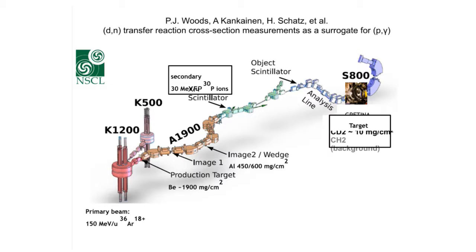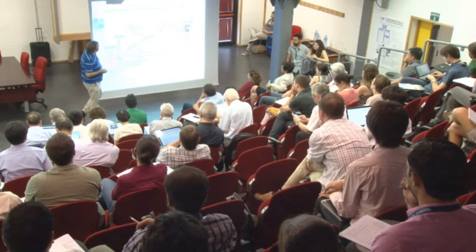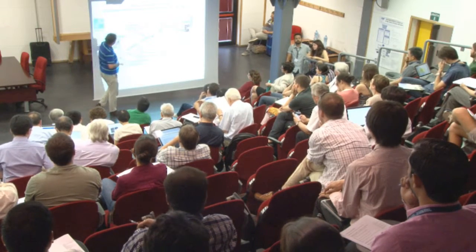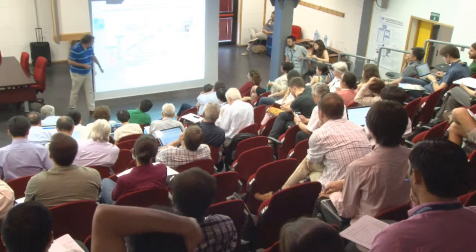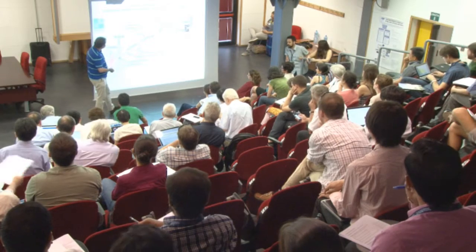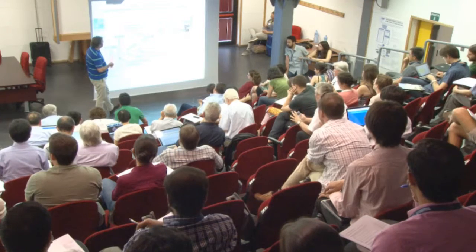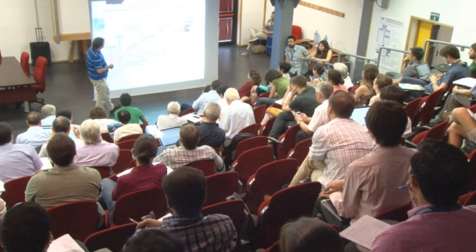The idea was to measure the DN reaction and determine its strength as an integral measurement — to determine the cross section and measure the resonance strength. This experiment was performed at MSU, at the NSCL. It used a primary beam of 150 MeV/u argon-36 ions fragmented on beryllium and degraded in energy. We ended up with 30 MeV/u phosphorus-30 ions — a beam of about a million particles per second.